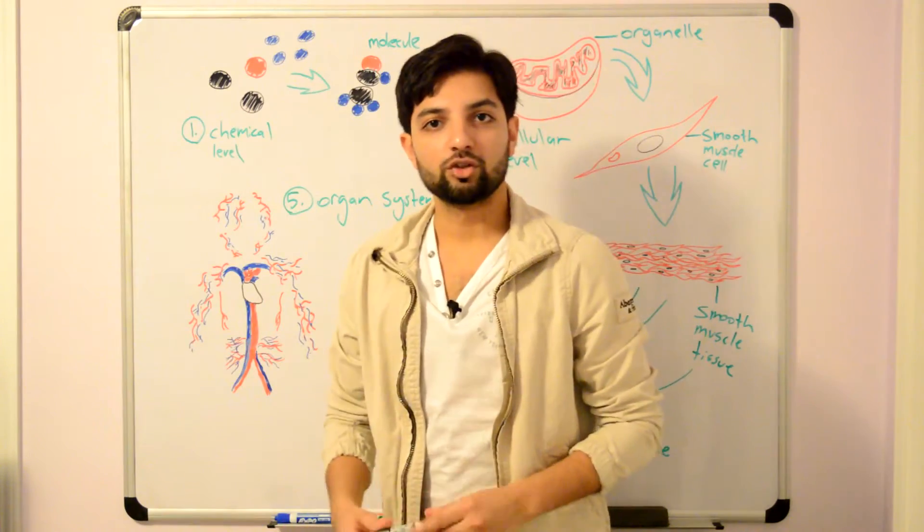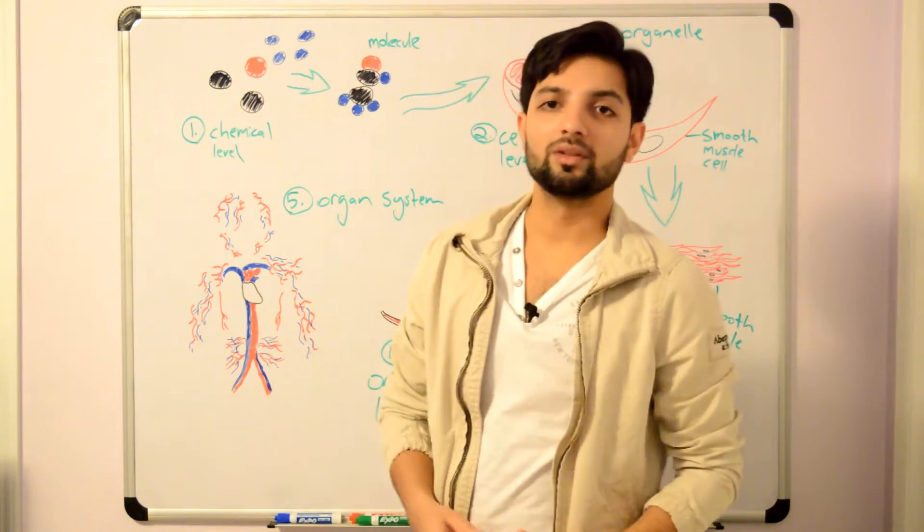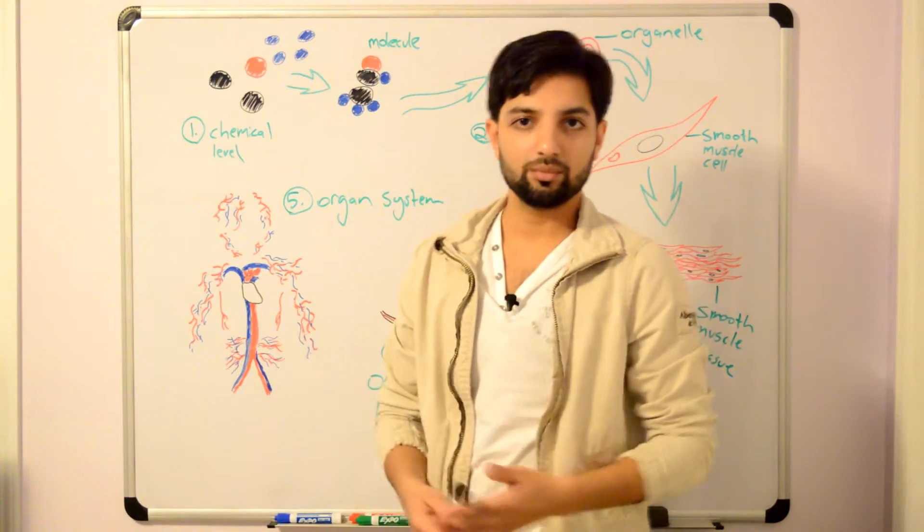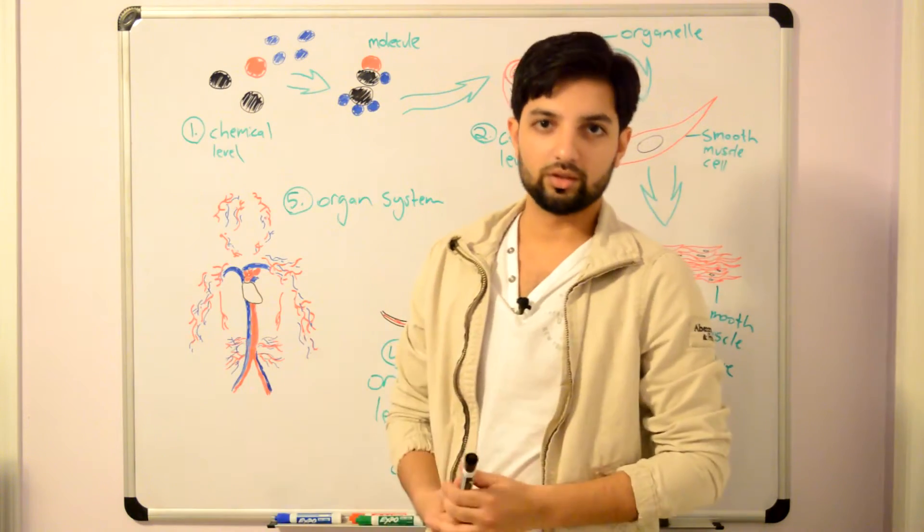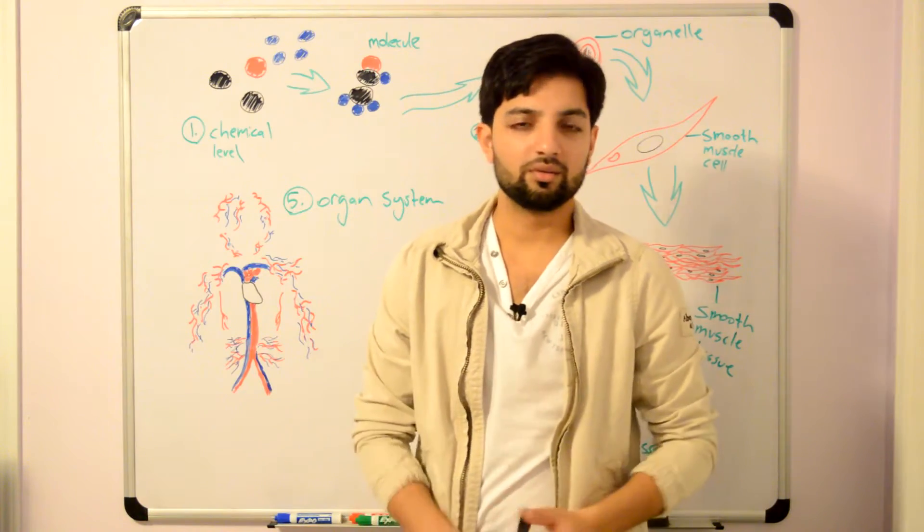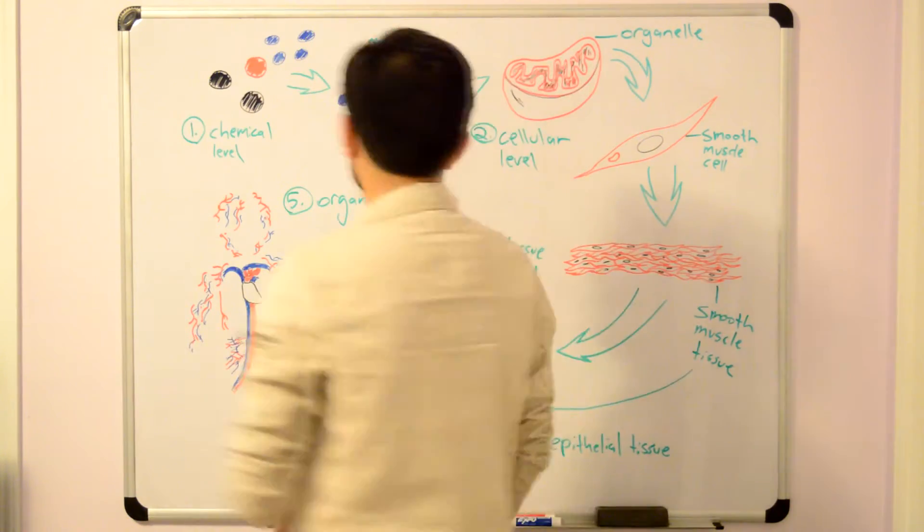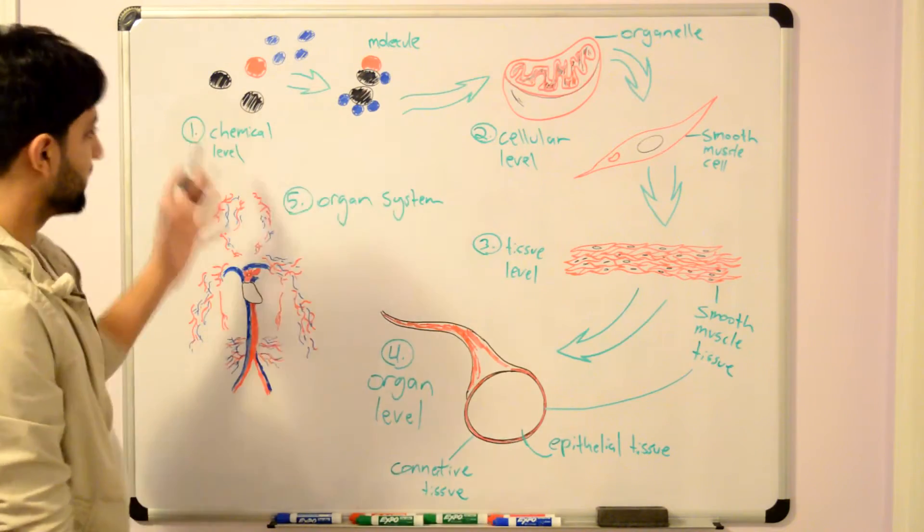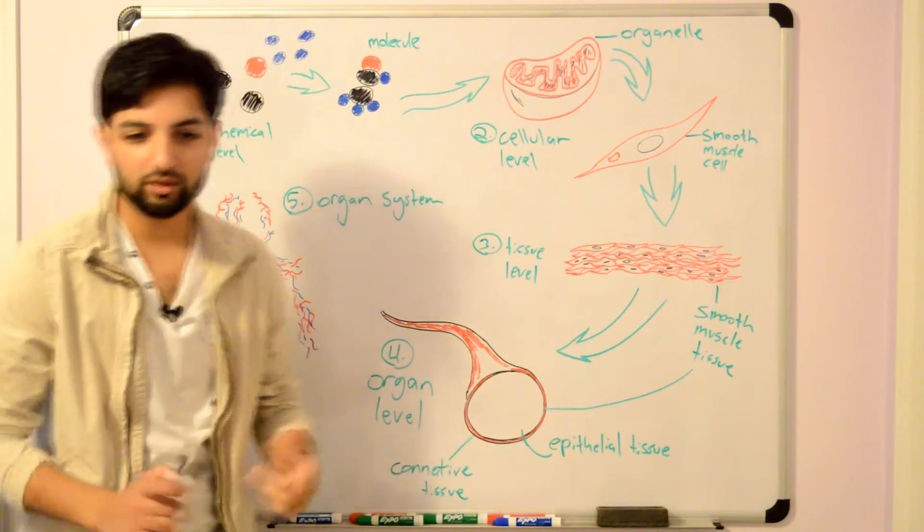The first level of structure is the chemical level, the most fundamental level. This is composed of atoms coming together to form molecules. Examples of molecules are water, protein, fat, and lipid. That's the first level: the chemical level, atoms and molecules.